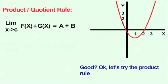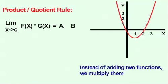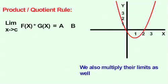Let's try the product rule. The product rule isn't much different from the additive rule. Instead of adding two functions, we multiply them. We also multiply their limits as well.